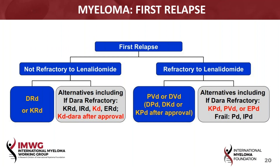There are new drugs like selinexor that you could think about, because the DARA-refractory population really worries me. That's a population in whom disease can behave very badly once DARA has failed a patient, and I think that's an area of importance.